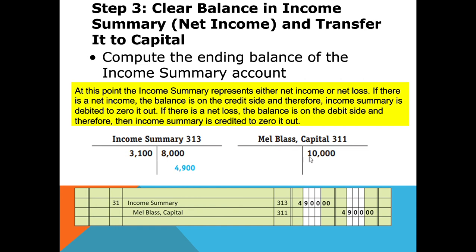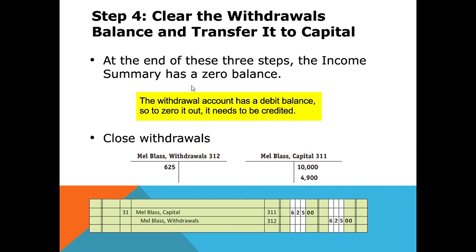Step four is set in stone: zero out withdrawals and transfer to capital. Withdrawals have a normal debit balance. To zero it out, credit withdrawals. We credit withdrawals $625 — bringing it to zero — and debit capital $625, bringing capital down. When you debit capital you're decreasing it, which makes sense because withdrawals reduce the owner's equity.